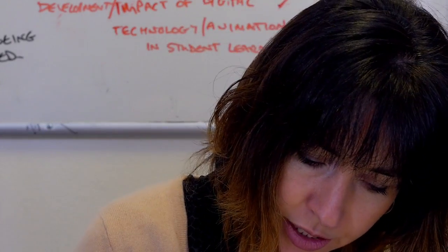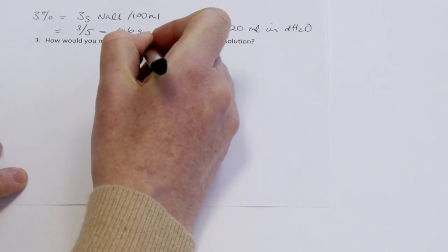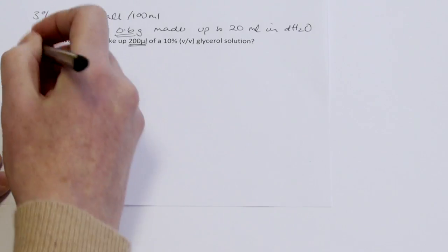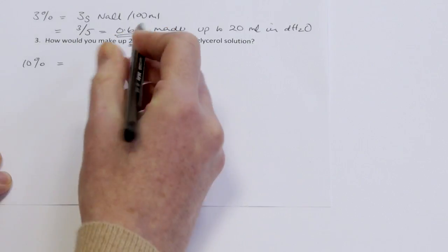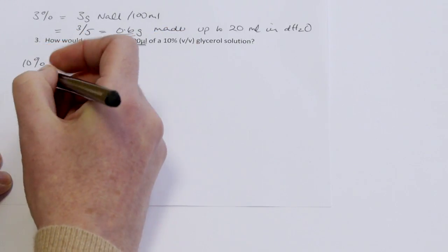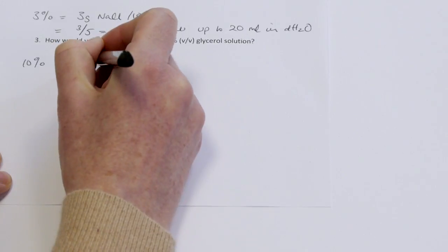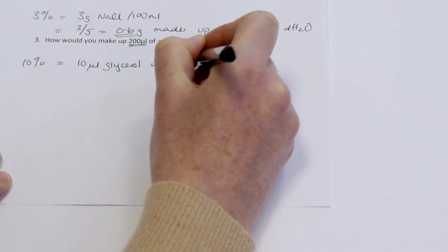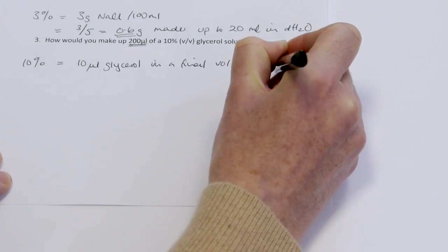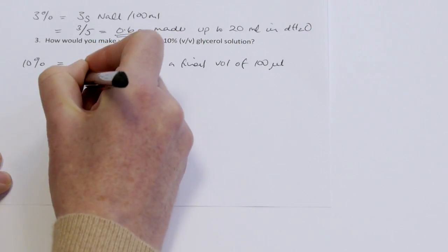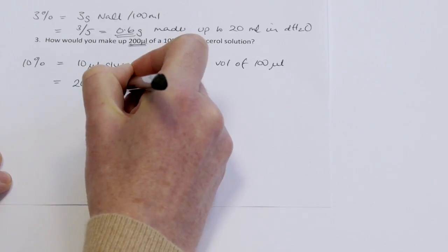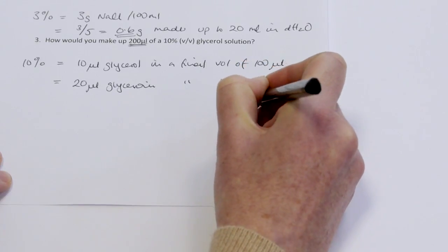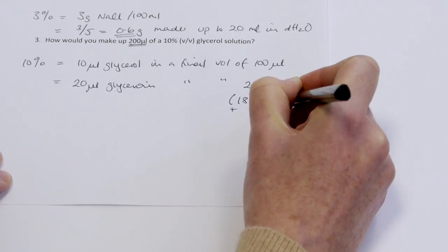In the last question we have to pay attention to the scale of the volume — it's 200 microlitres of a 10% volume per volume glycerol solution. A 10% glycerol solution, calculated for 100 microlitres to make it easy, is 10 microlitres of glycerol in a final volume of 100 microlitres. So to make 200 microlitres we just double that: 20 microlitres of glycerol in a final volume of 200 microlitres, meaning we would add 180 microlitres of water.